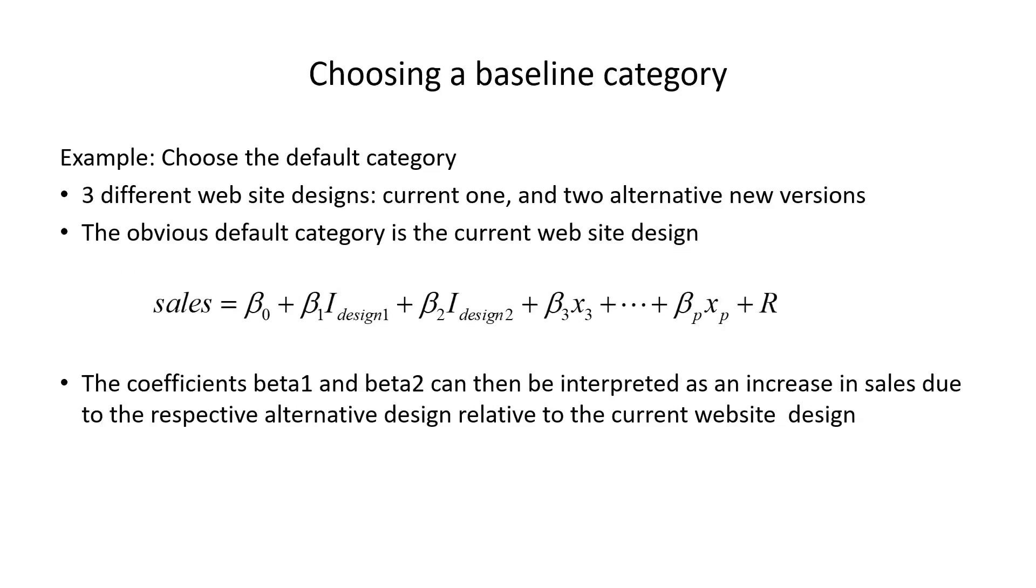The obvious default category is the current website design, because presumably the two alternative new versions are trying to improve in some sense on the current version. So you always want comparisons to the current one. You would add an indicator for alternative design one and alternative design two.